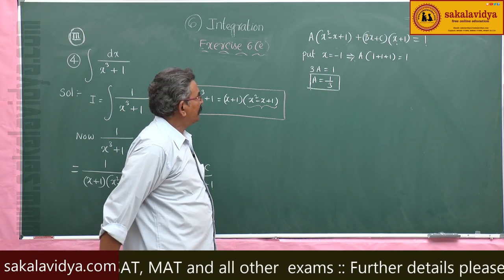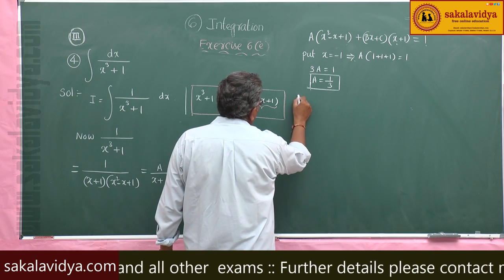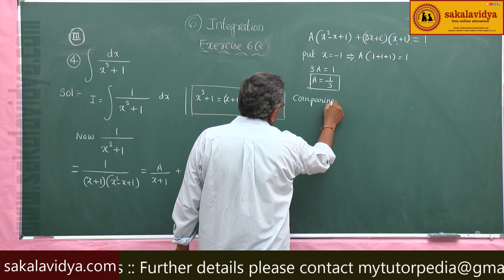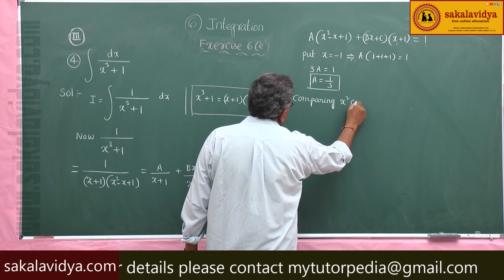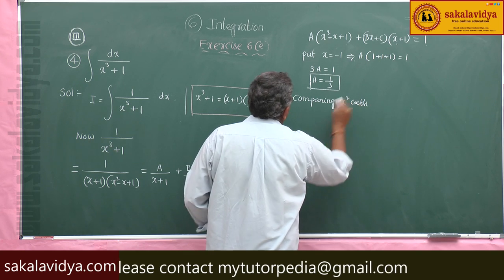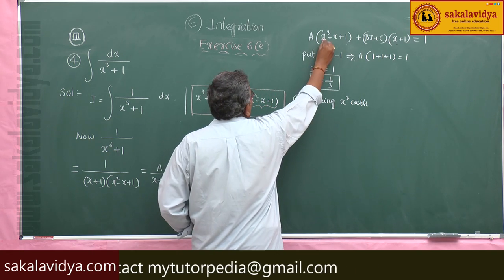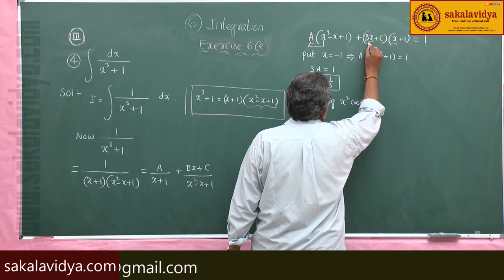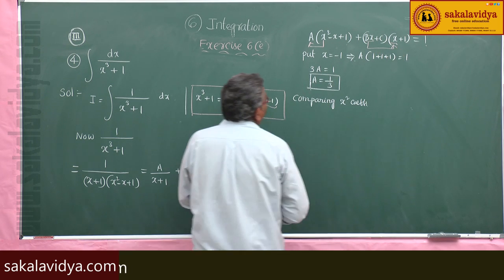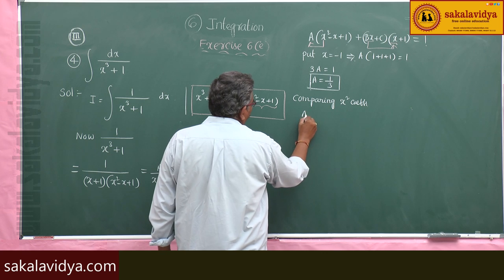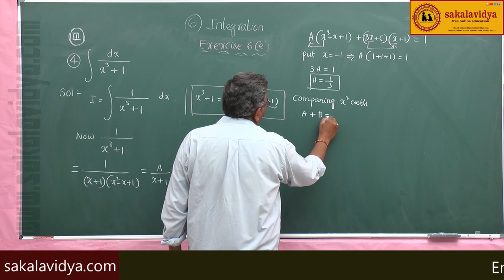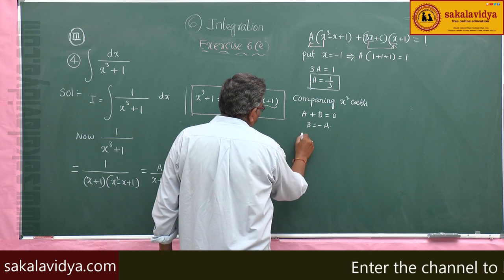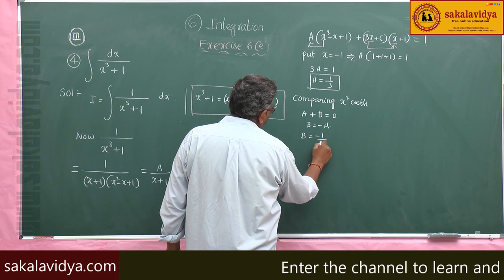Now comparing x square coefficients: A plus B equals 0, so B equals minus A, therefore B equals minus 1 by 3.